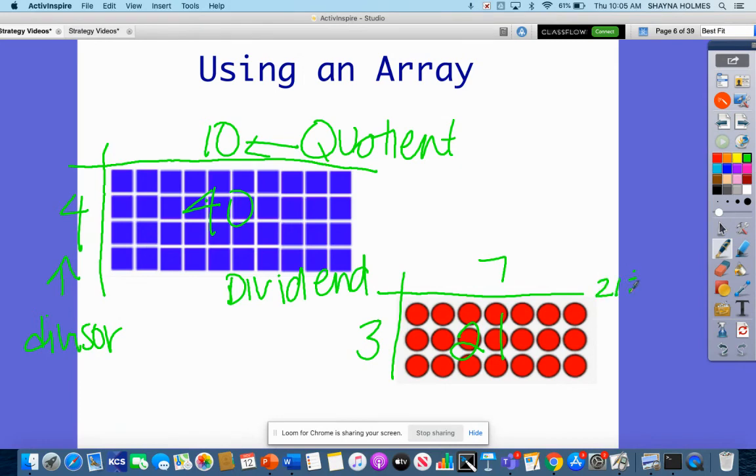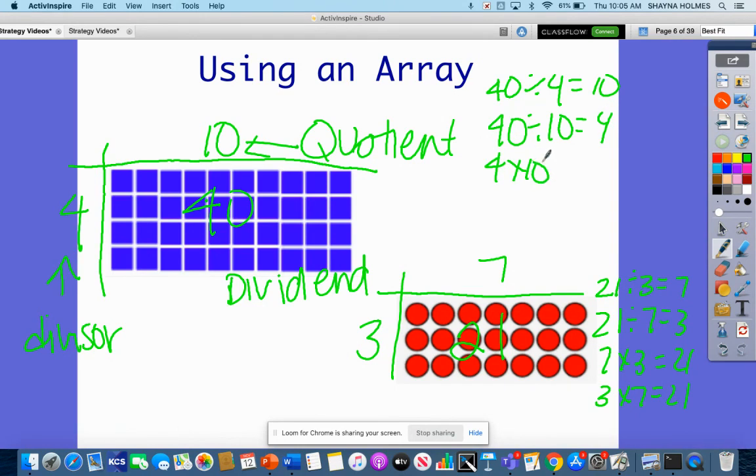Let's do our fact family for this. Twenty-one divided by three is seven. Twenty-one divided by seven is three. Seven times three is twenty-one, and three times seven is twenty-one. Now for the first one: forty divided by four was ten, forty divided by ten is four, four times ten is forty, and ten times four is forty.